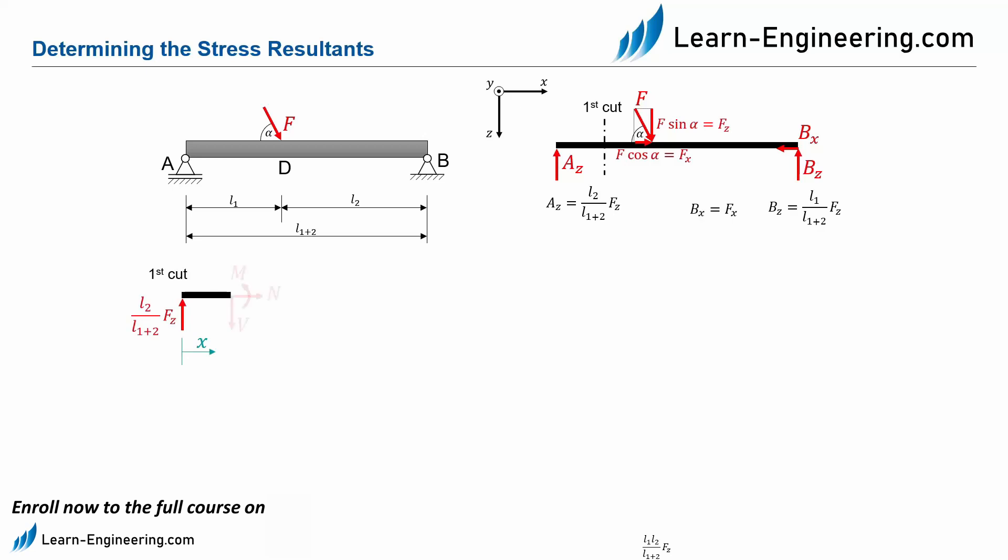At the positive end of the beam at the intersection we now enter the three stress resultants: N for the normal component, V for the vertical component, and M for the moment. All stress resultants are assumed to be positive because we are at the positive end of the beam.